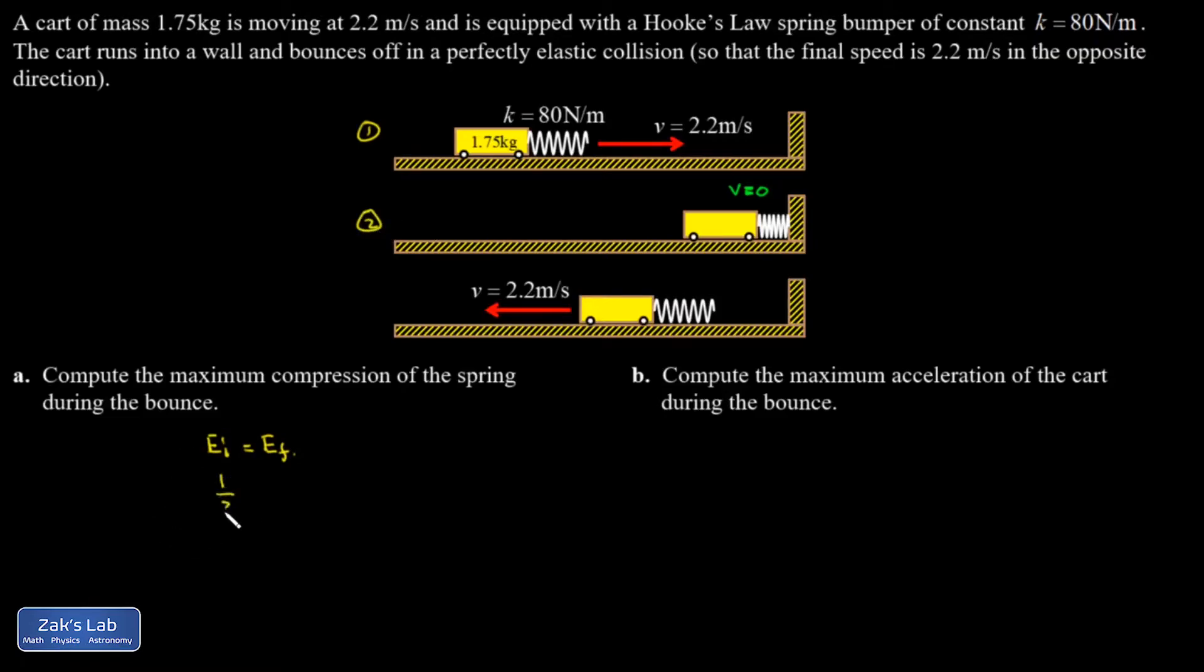And I have 1/2 mV squared. All the energy was kinetic in that initial state. There is no spring potential because the spring is relaxed. In the final state, there's no kinetic, and all the energy is in the potential energy of the spring.